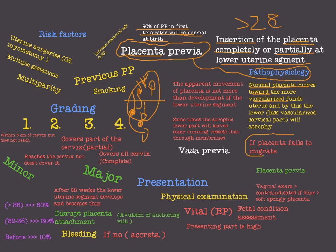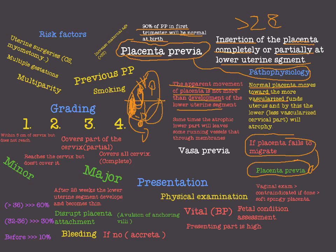If the placenta fails to migrate for one cause or another, the placenta stays in place without migration to the more vascularized part, and then we have a case of placenta previa. The apparent movement or migration of the placenta is not really a movement — it's just the development of the lower uterine segment after 28 weeks.